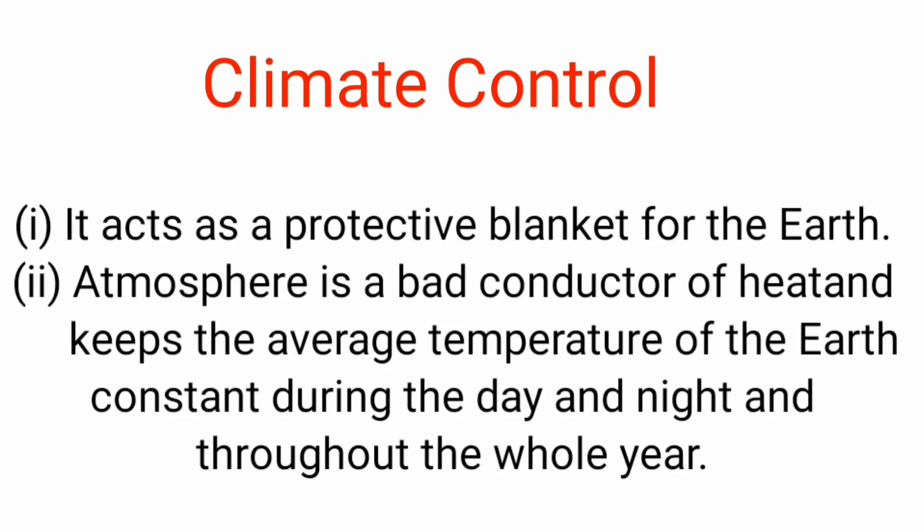The atmosphere also plays a role in climate control. It covers the earth like a protective blanket. Since the earth is a bad conductor of heat, the atmosphere prevents a sudden increase in temperature during daylight hours, and at night it slows down the escape of heat into outer space. Thus it keeps the average temperature of earth steady throughout the day and year, ensuring the right amount of heat is received to allow living things to survive.